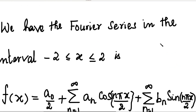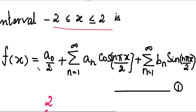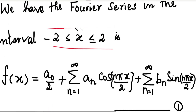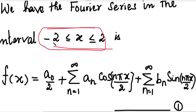Therefore the Fourier series in the interval (-2, 2), with l = 2, is defined by f(x) = a₀/2 + summation of aₙ cos(nπx/l) + summation of bₙ sin(nπx/l), where l = 2 and n varies from 1 to infinity. The limit formula is from -l to +l, that is from -2 to +2.